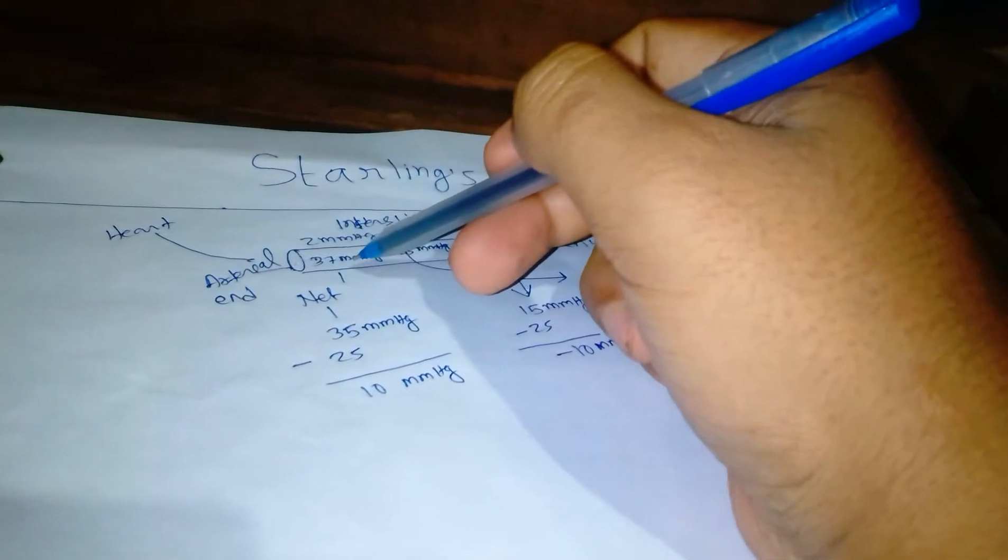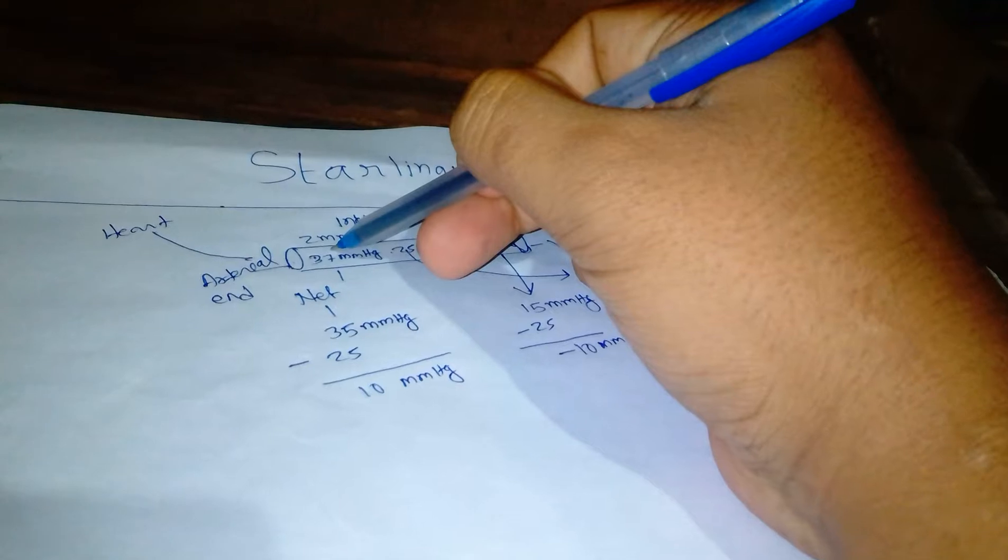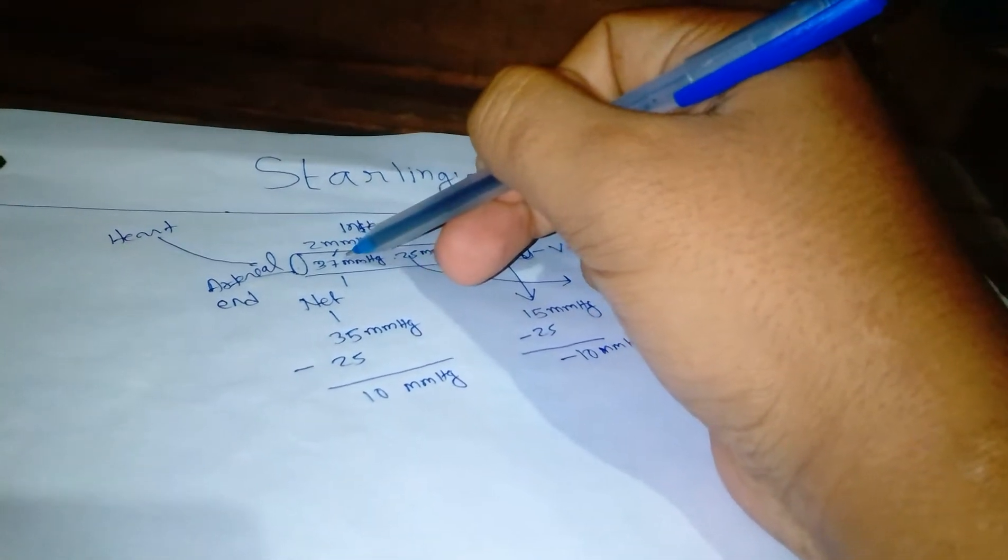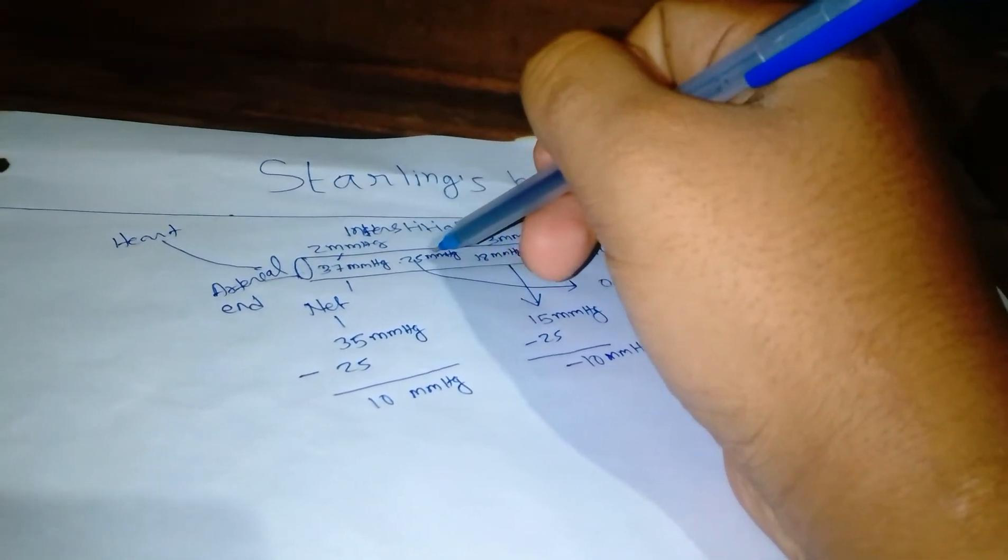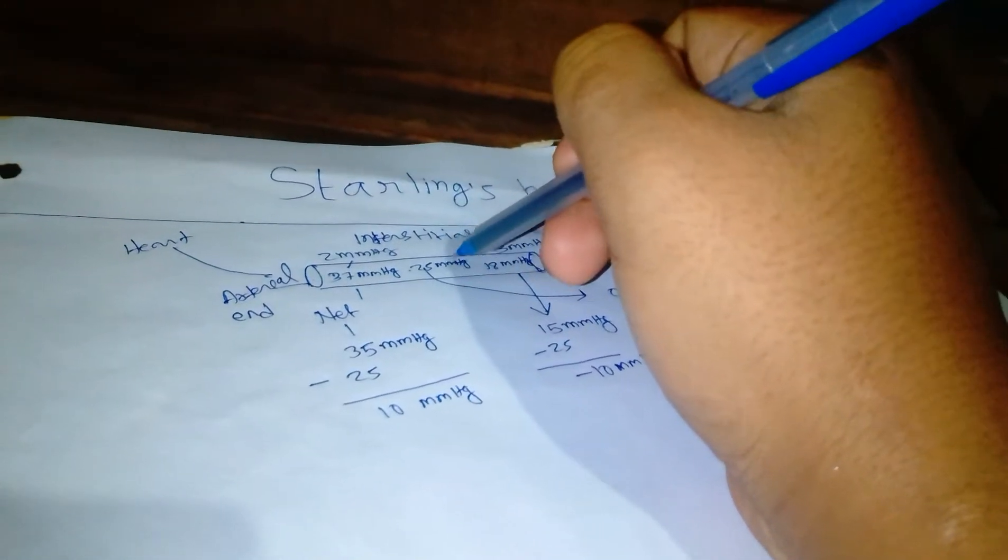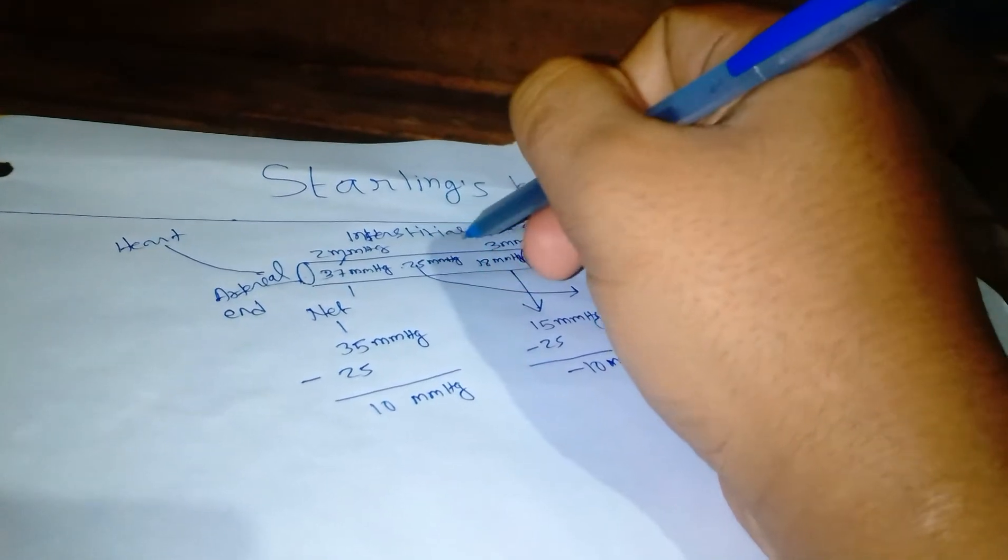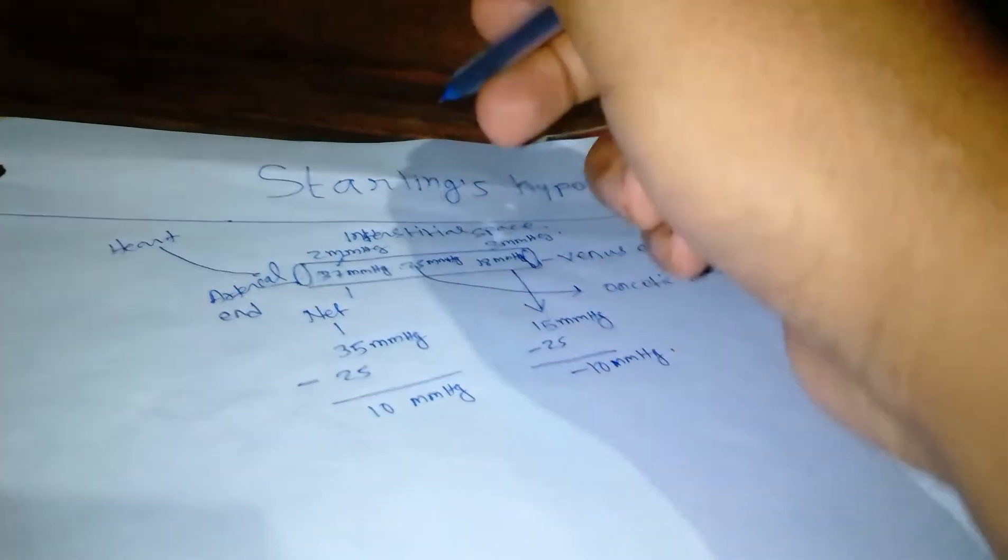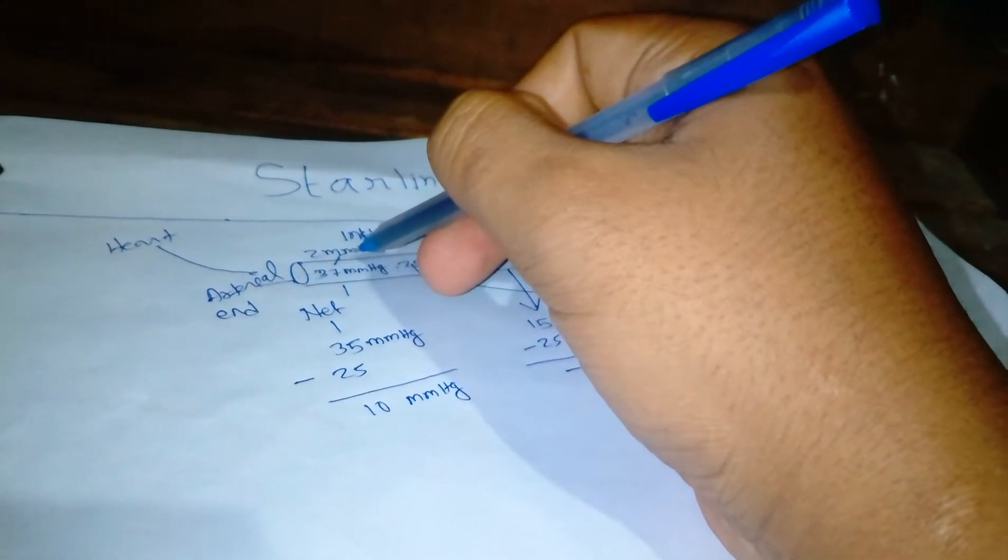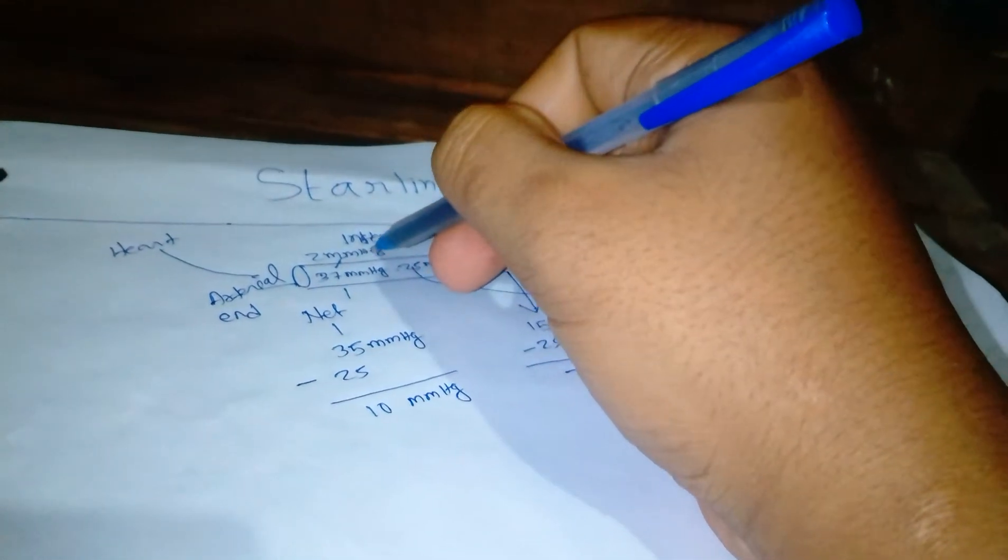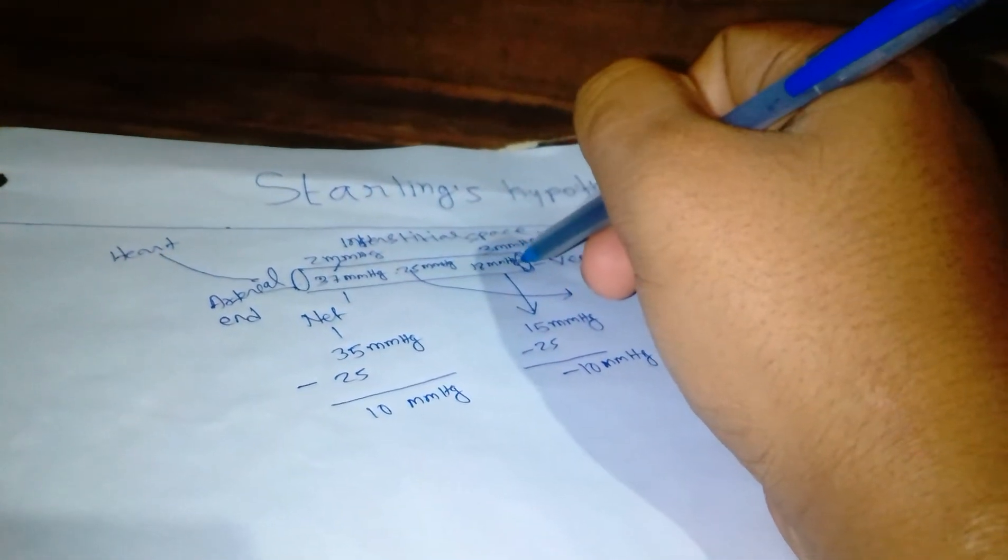So here, due to the hydrostatic pressure being more, the fluids will move out of the capillary, leaving the plasma proteins inside and making it concentrated with proteins. And from here, along with the fluid, it will take nutrients and other essential substances for the cells.